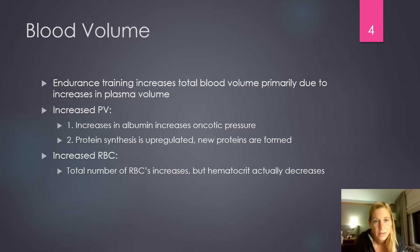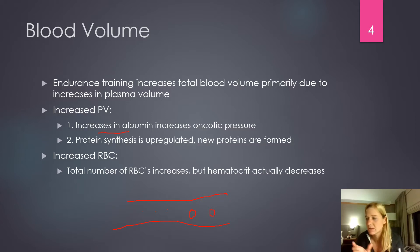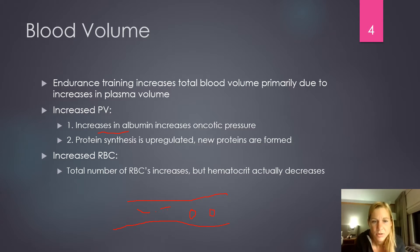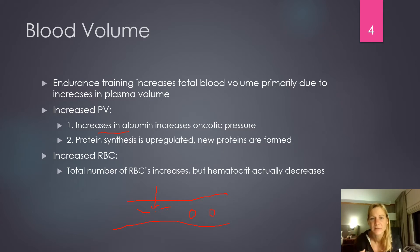Inside the blood vessel you have red blood cells and other components. One thing that's going to change is we're going to increase albumin levels. Albumin is a little protein that floats around inside the blood, and as we increase these proteins, we also increase oncotic pressure — a pressure that pulls fluids in. Those protein molecules attract fluid, and that fluid is pulled in via oncotic pressure. As albumin increases, oncotic pressure inside the vessel increases, and fluid comes in.